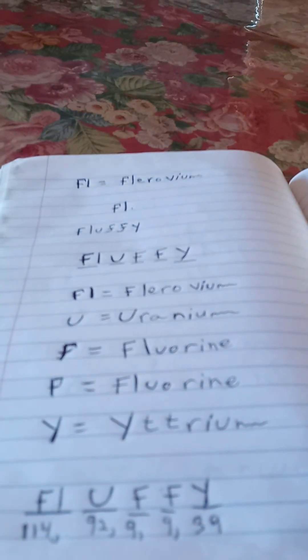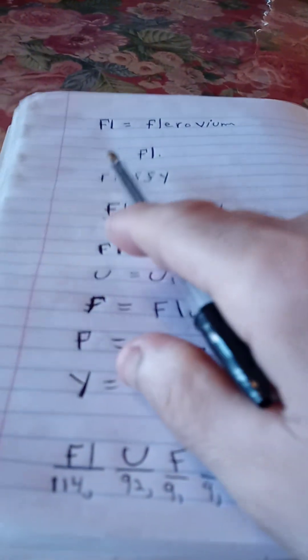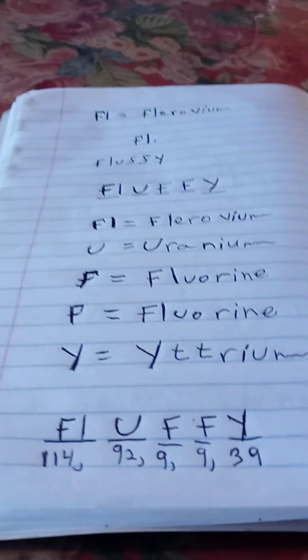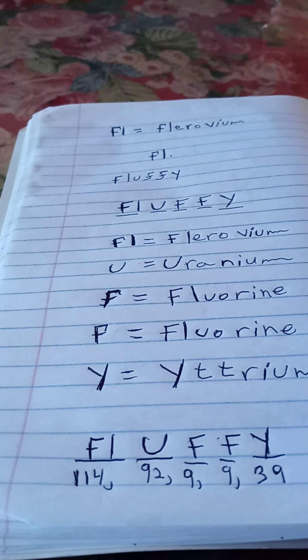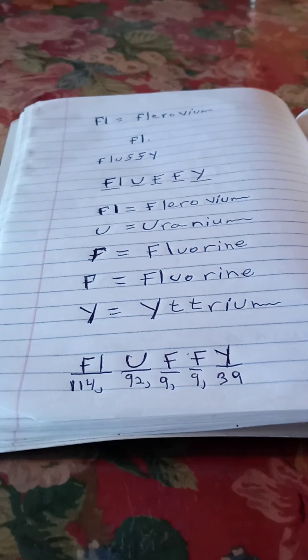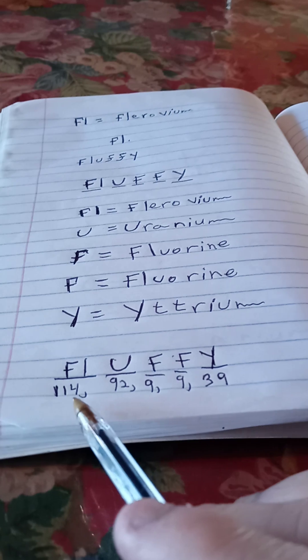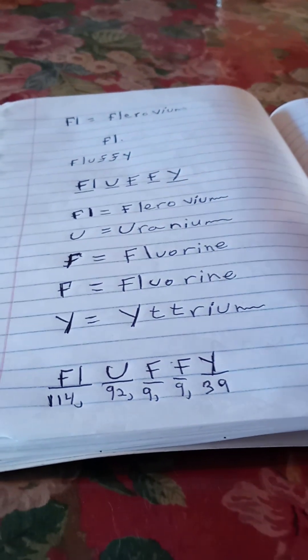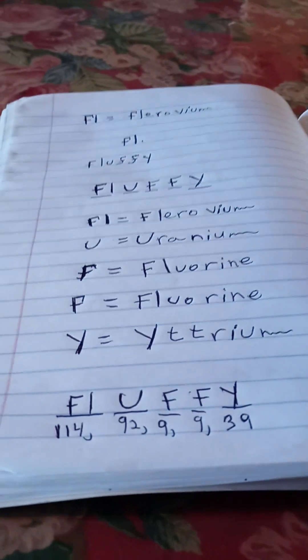All right, there you go. Capital F and a small L equals Flerovium. And there's the chemical symbol. Here's the atomic number, 114, 92, 9, 9, 39. Okay, have a good day over now. Bye-bye.